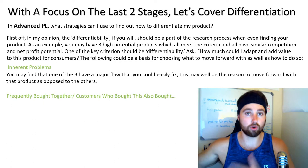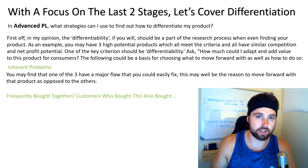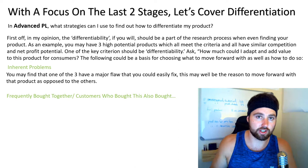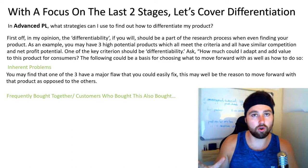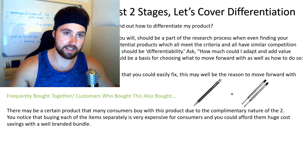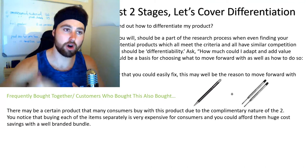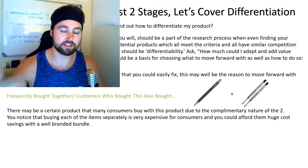Number two is your frequently bought together sections on the listing — sometimes also called 'customers who bought this also bought.' Always scroll down to the bottom of the listing and have a look at what people are buying with this product. It will give you ideas into incorporating the functionality of that second item into your main item, or look at bundling your items together. And the other reason this is so important is that when consumers are buying two items separately, each is marked up by itself. When you bundle the two together under one offering and only mark it up once, very often you can give this to the customer at a better cost.